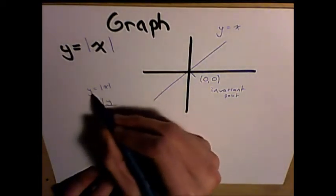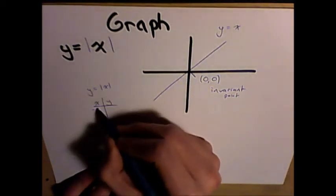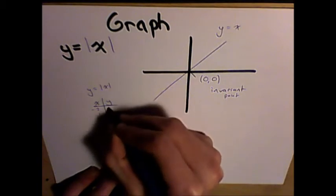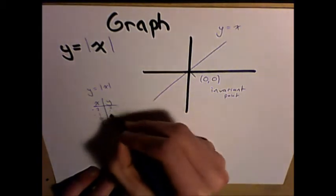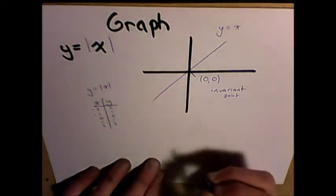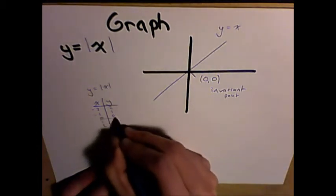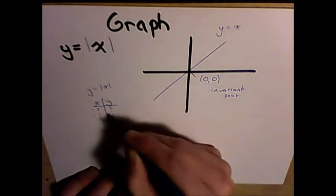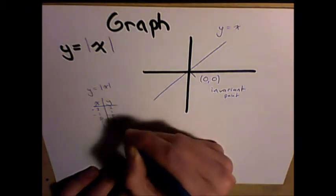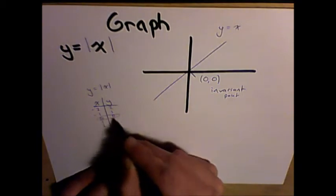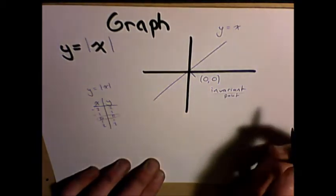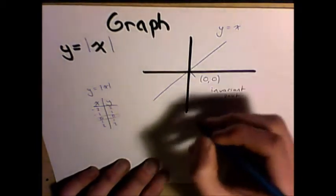So we take the absolute value of all our negative x numbers and we flip them to be positive, and we're given this 2, 1, 0, 1, 2. And you'll notice that the point where these numbers are equal and they start to come down and they start to go back up, this lowest point is the same as the invariant point or our x-intercept.